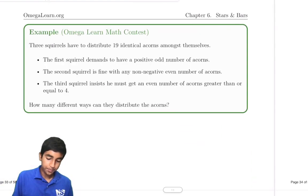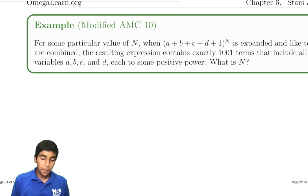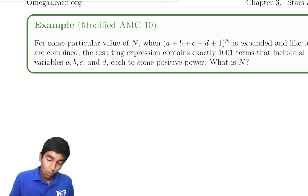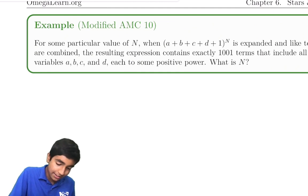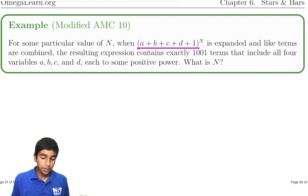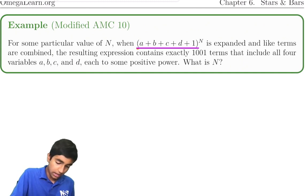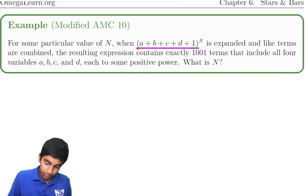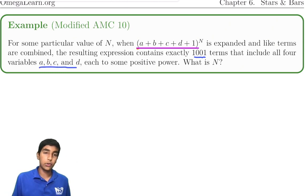Let's take an example. For some particular value of N, when (a + b + c + d + 1)^N is expanded and like terms are combined, the resulting expression has 1001 terms that include all four variables to some positive power. Find N.